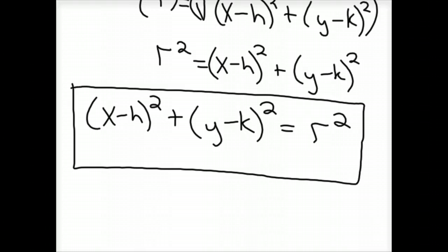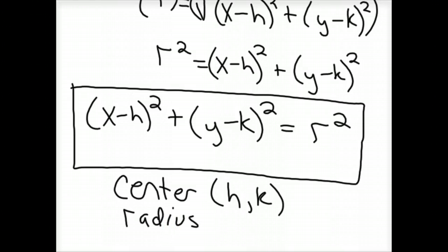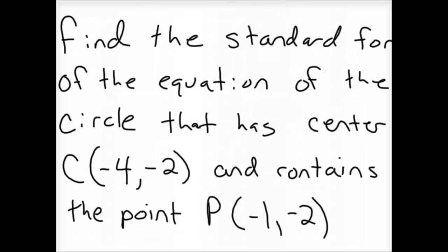So again, x minus h squared plus y minus k squared equals r squared is the equation of a circle, where the center of your circle is hk, and the radius of your circle is r. You just take the square root of that number, and you will always get your radius. Okay, so let's look at a couple problems.